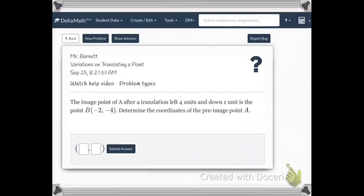All right. In the next example, right here, this tells us the image of point A after a translation left 4 units and down 1 is the point B, negative 2, negative 4. Determine the coordinates of the pre-image point A. So notice the image of point A is what they gave us. This is the image. We want to find the pre-image.